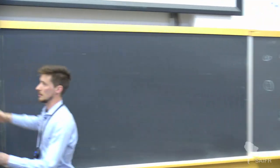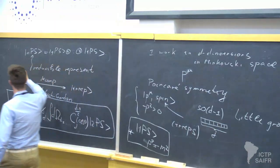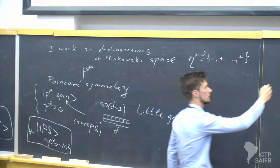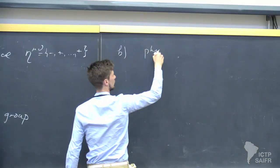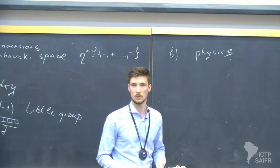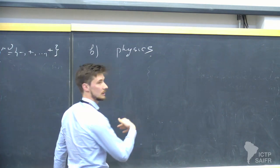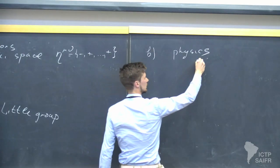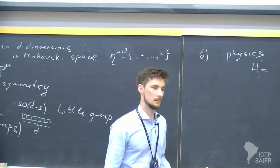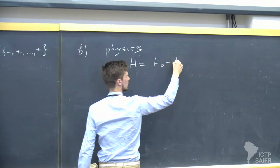So that was the group theory part. Now the second thing I need is the physical setup. Basically I need to define asymptotic states. I'll assume that my system is described by a Hamiltonian H, and I will work with systems whose Hamiltonian can be split in two parts: H0 plus H interaction.